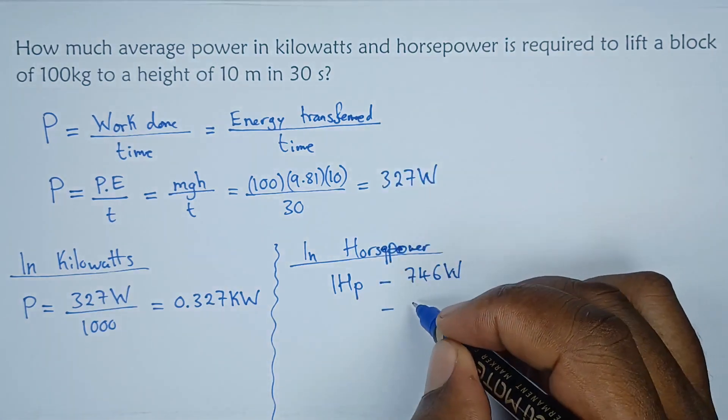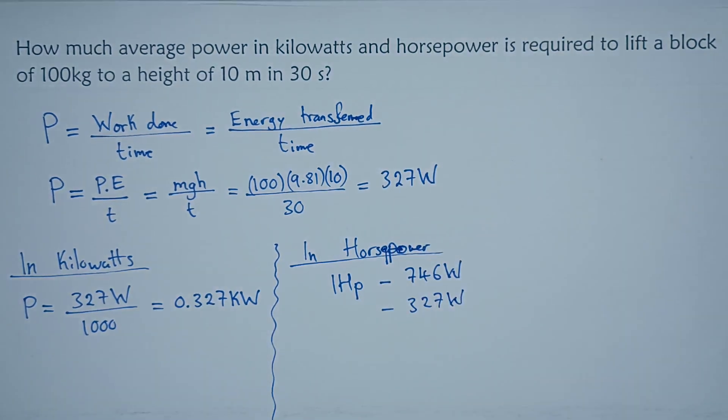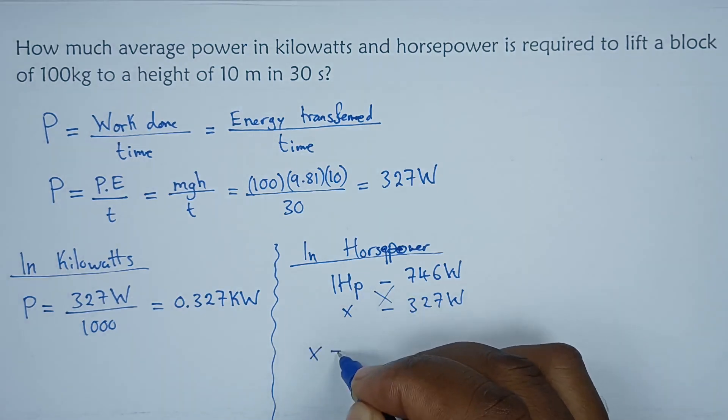So the number of watts that we have is 327. Let's say this is equivalent to x. So what we're going to do here is I'm going to cross multiply,